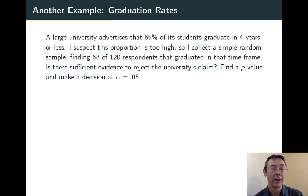That's less than 65%, by the way. So at some level it's going to provide evidence against the university's claim. Is it strong evidence, or is it plausible that this just happened due to random chance? Let's find a p-value and make a decision at significance level alpha equals 0.05.